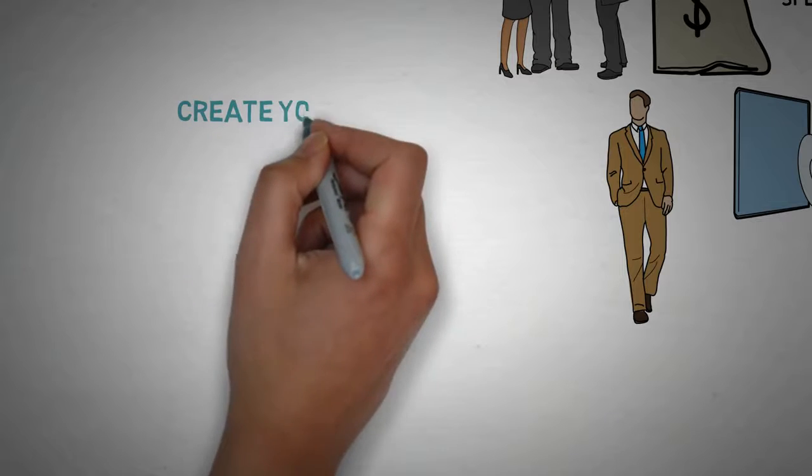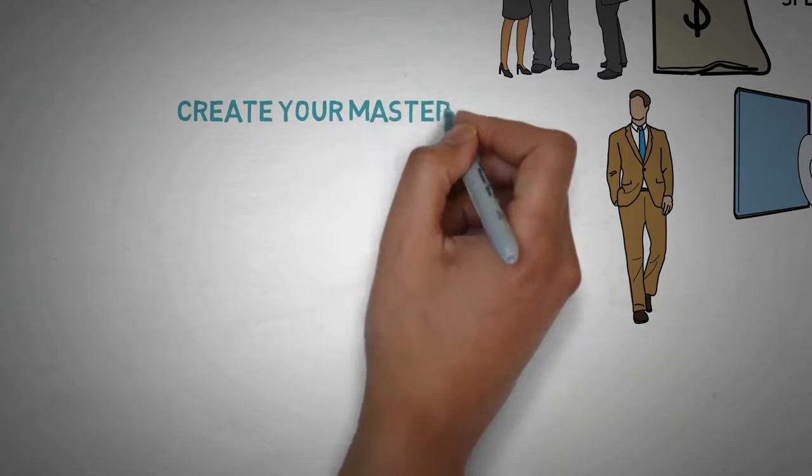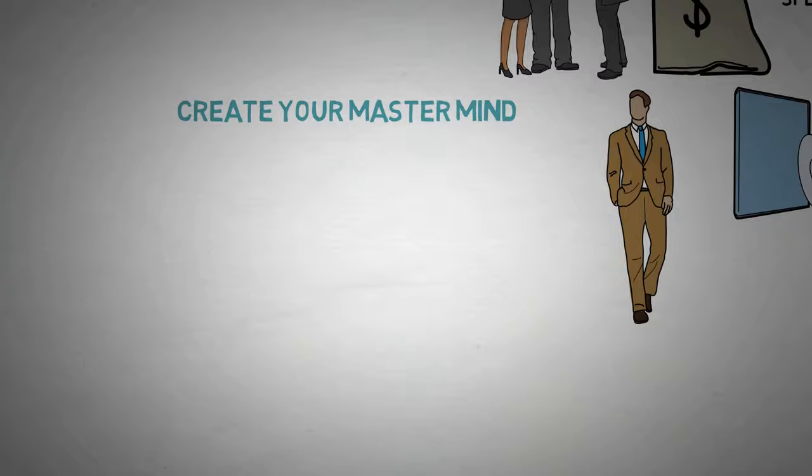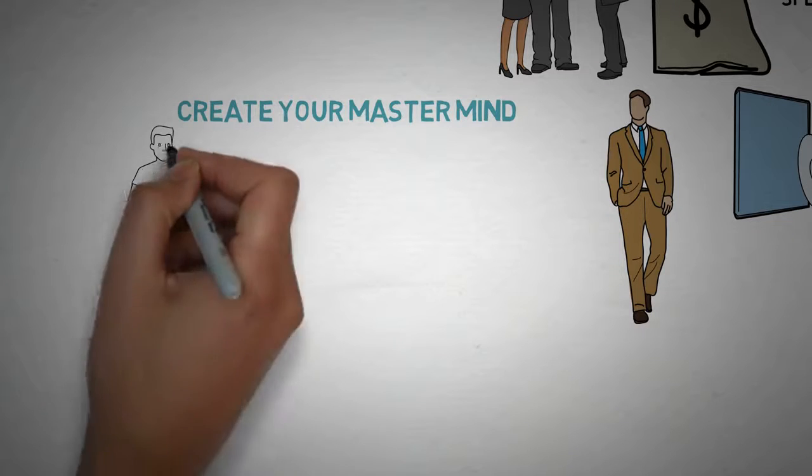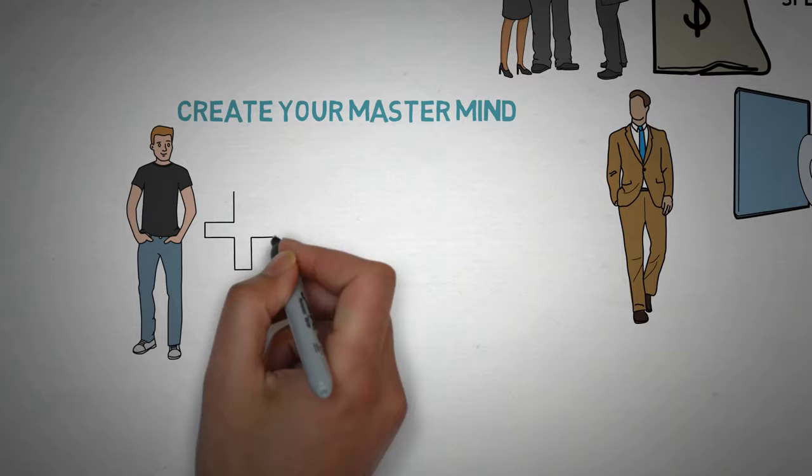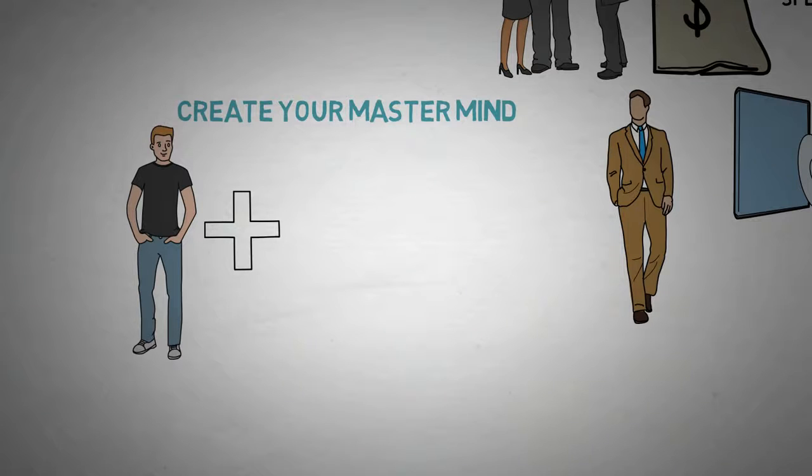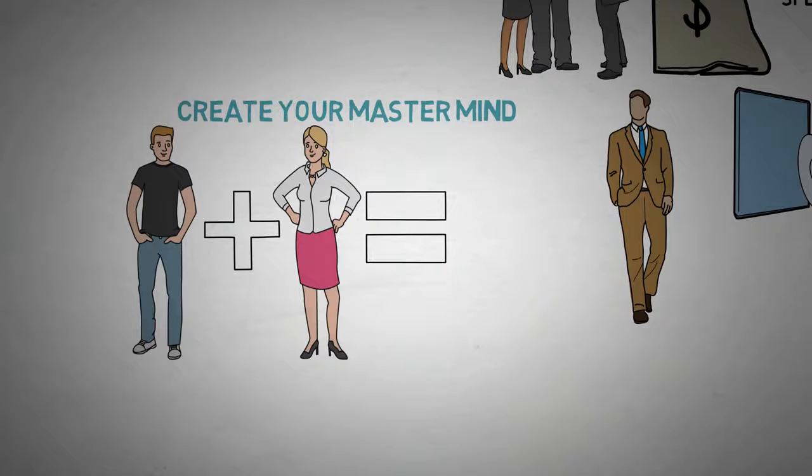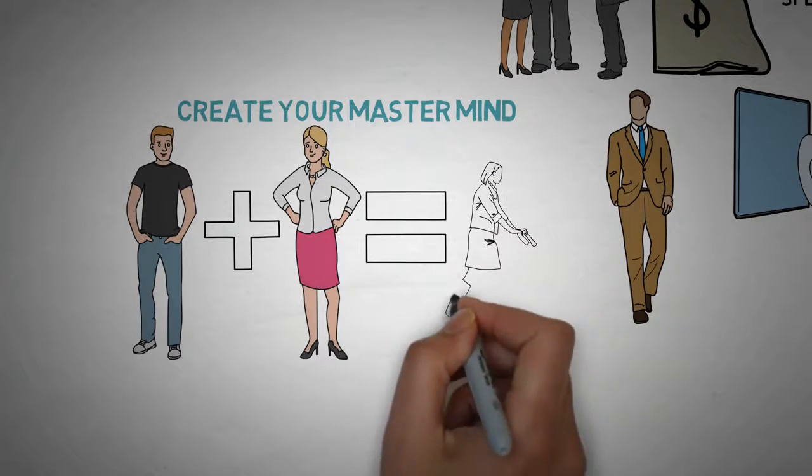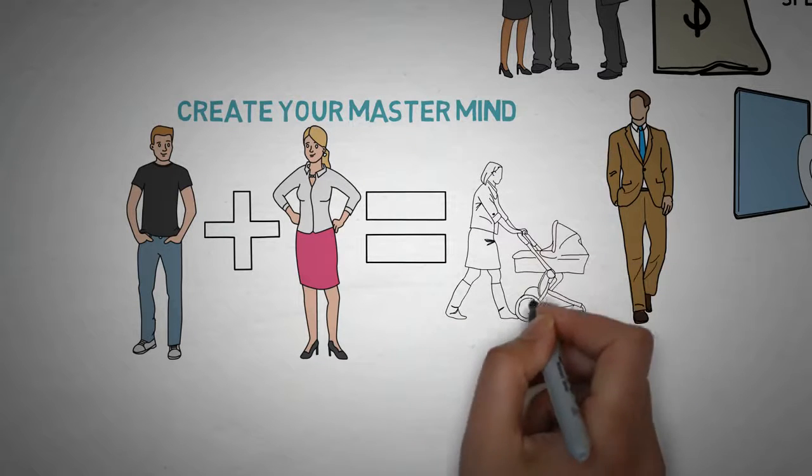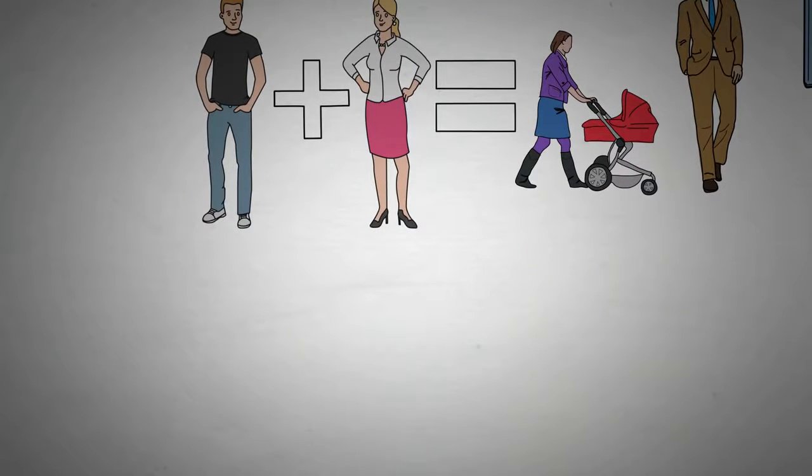The third principle is called the mastermind principle, and this is basically you need to be around people who are going to help you. Let's say that there's one human and they meet another human who is the opposite sex, and they get together and they mate and they have a baby. So what kind of math is this? Generally, this is one human plus one human equals three humans.